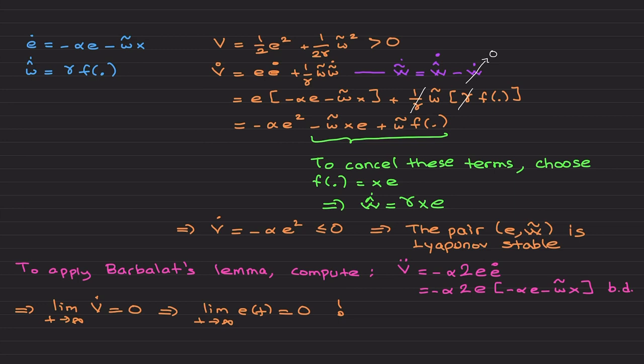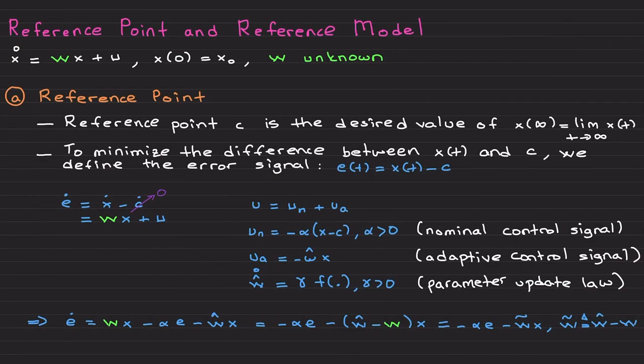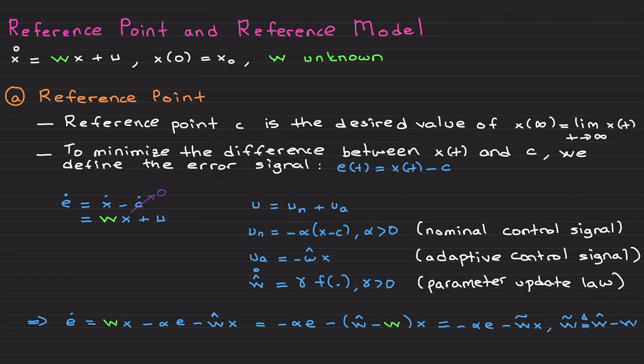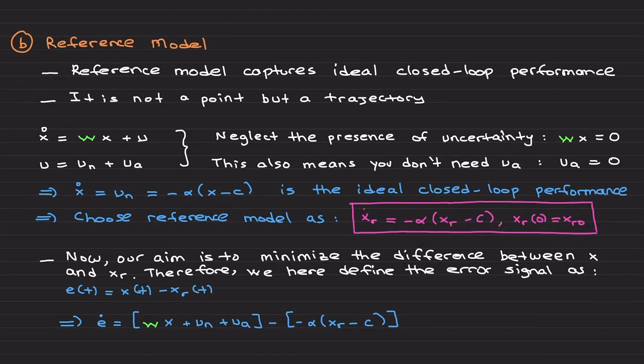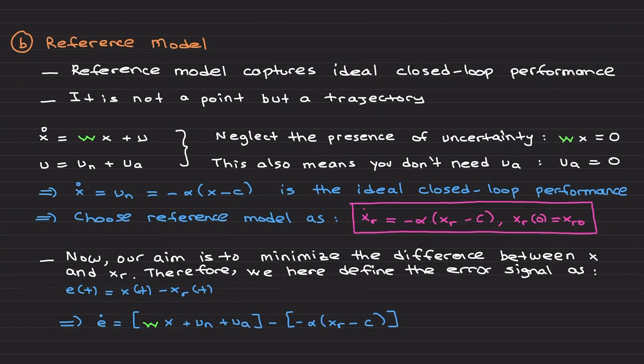This was the reference point based design — error going to zero, everything stays bounded and as expected. The Lyapunov function changed slightly for the command following problem compared to the stabilization problem, and we had the nominal control signal to handle the command following objective, unlike the stabilization problem in the previous video.